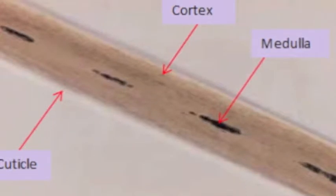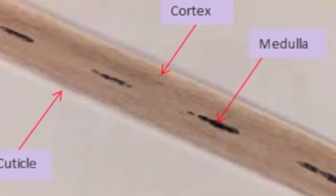This is a picture of a hair follicle including the cortex, the medulla, and the cuticle. There are five types of medulla patterns: continuous, which is one unbroken line of color; interrupted, which is a line broken at regular intervals; fragmented, which is a pigmented line unevenly spaced; solid, a pigmented line filling the medulla and the cortex; and none, with no pigmentation at all.